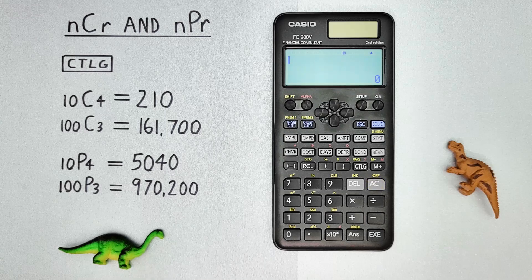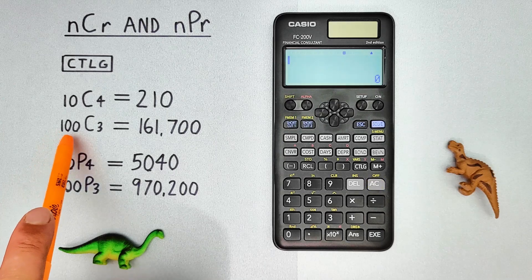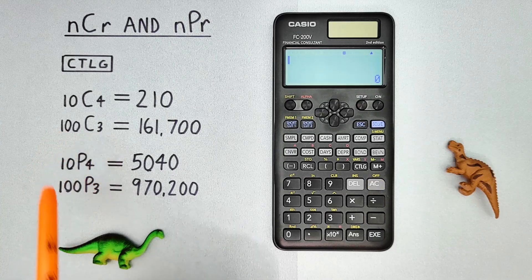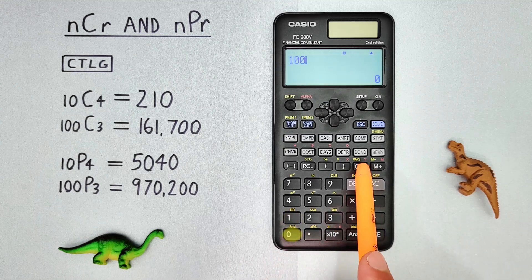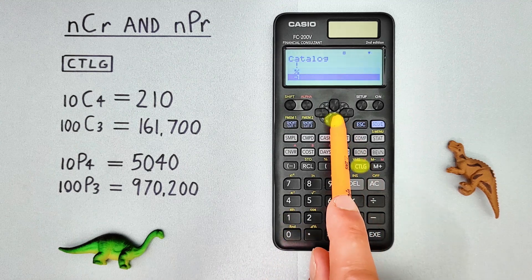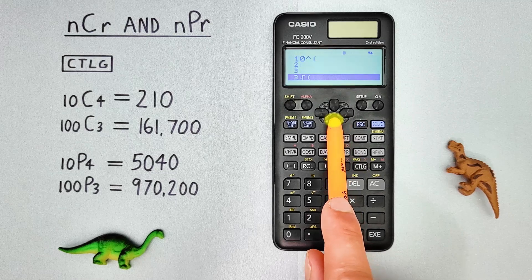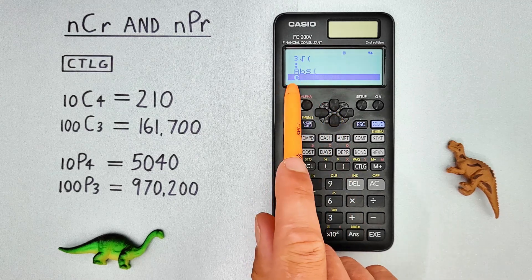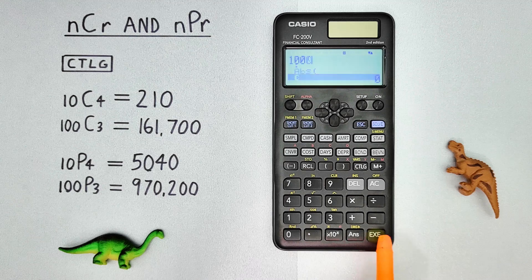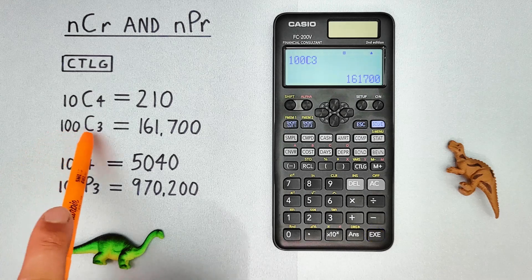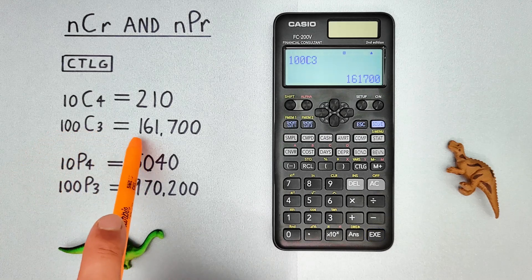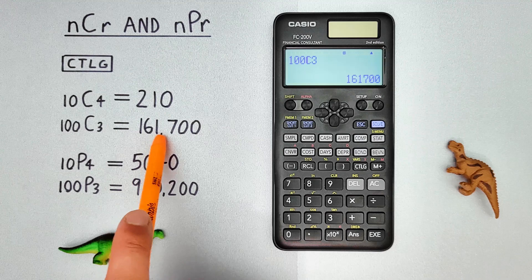Another example: let's say we had a set of 100 and wanted to choose 3. Again, we start by entering the 100, go to Catalog, scroll down until we see the C there, select it, and then enter the 3 and hit EXE. And we see that we get 100 choose 3 combinations is equal to 161,700.